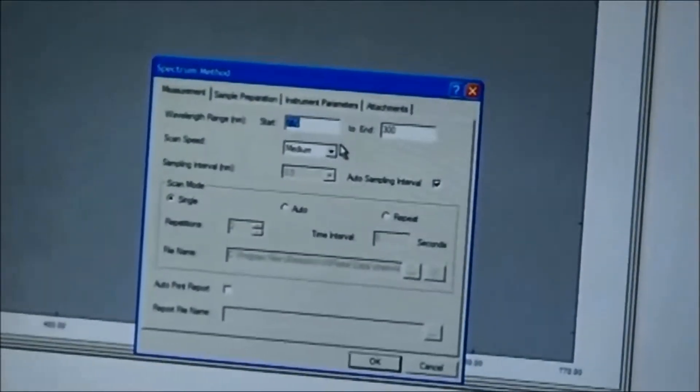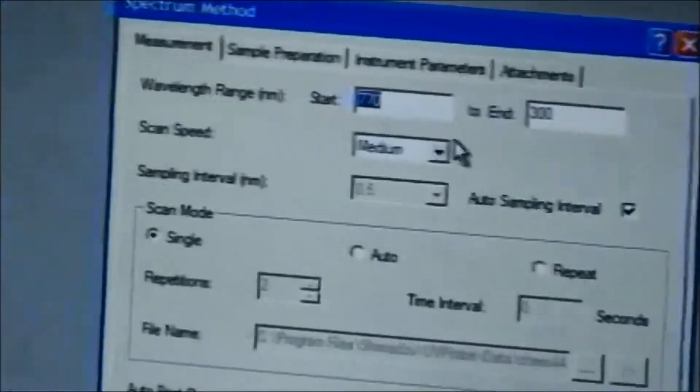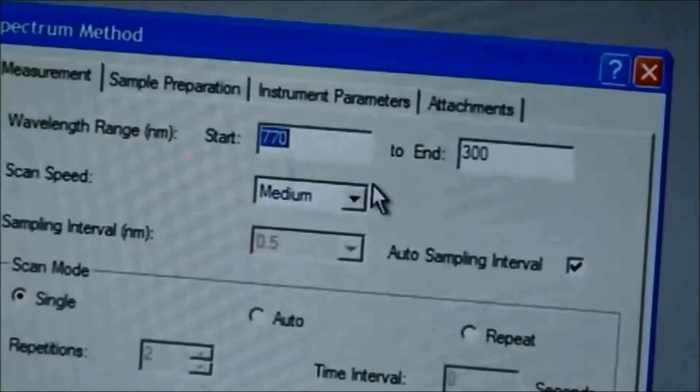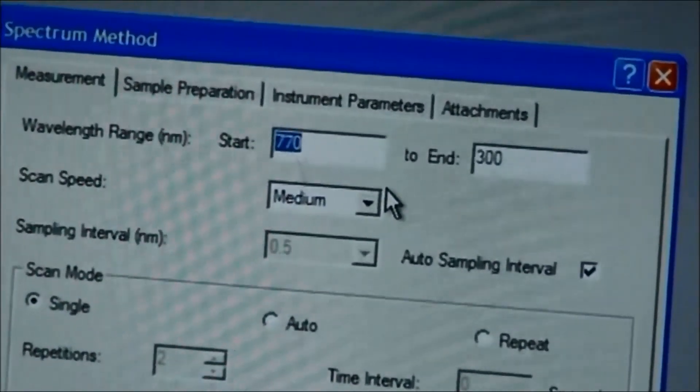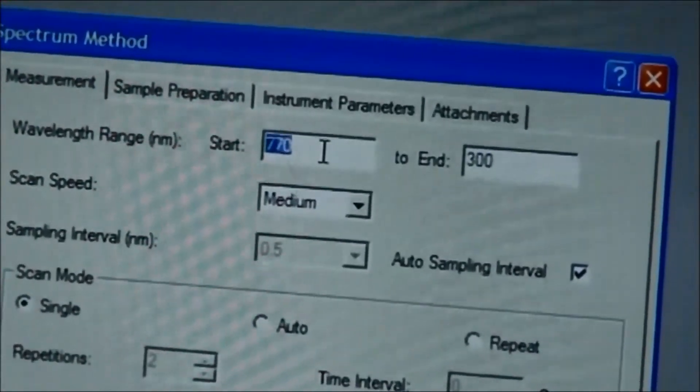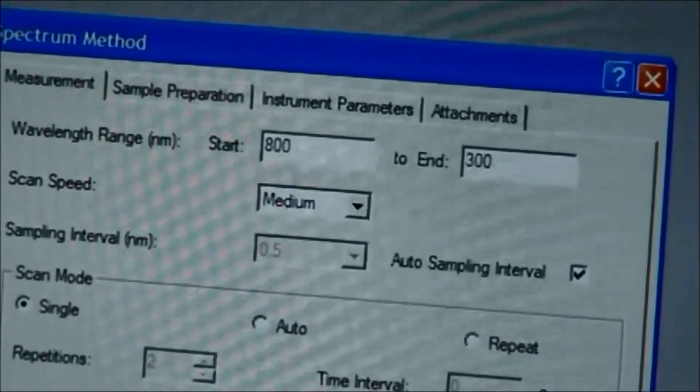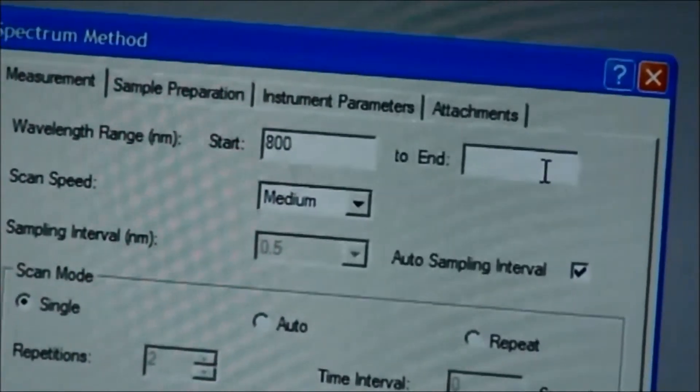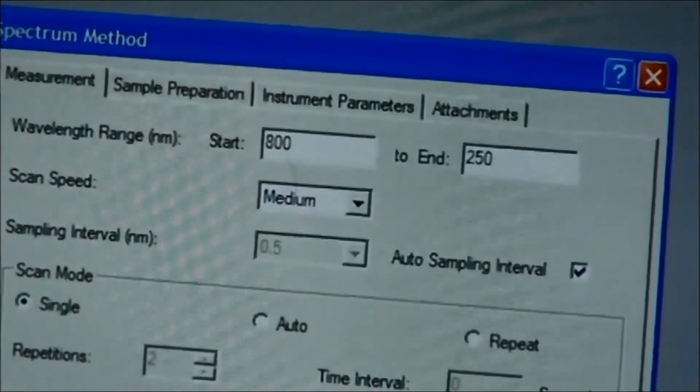In this case, we'll be scanning from 800 nanometers to 250 nanometers. So you go to your wavelength range and put in your 800 to 250 nanometers.